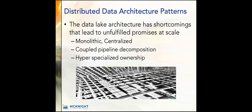Some shortcomings of a vanilla data lake include being monolithic and centralized, coupled pipeline decomposition, and hyper-specialized ownership. The goal is to get in alignment with operational systems on domain-specific boundaries. The idea of central data teams — not just having data distributed but having data teams distributed — means we have to learn these domains before effectively integrating or building out the architecture. The idea of a global data lake for a large company is probably not in the cards straight out.